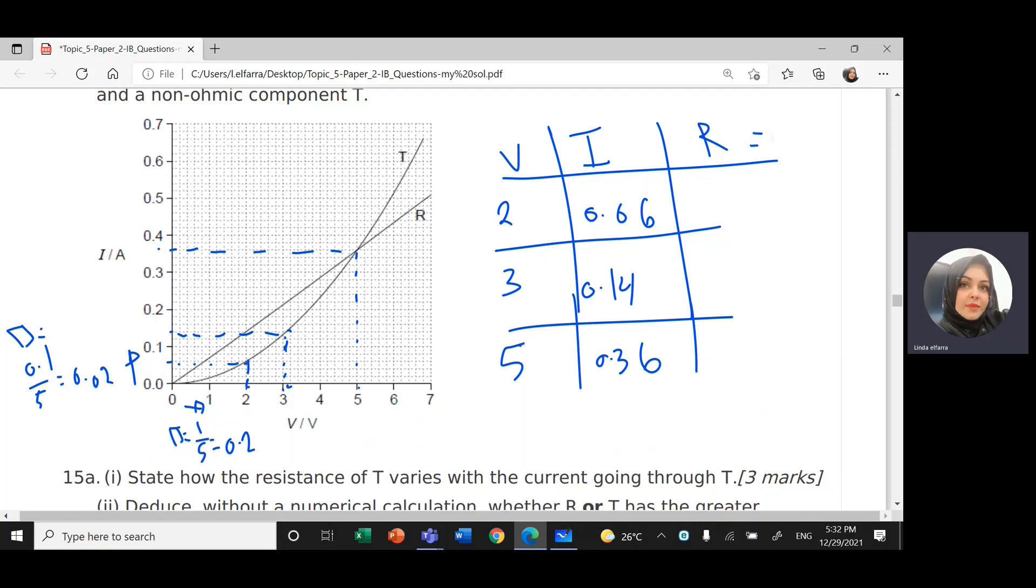Each time I'm going to calculate R from Ohm's law. R, it's voltage divided by the current, V over I. So R equals V over I. So 2 divided by 0.06 will give me almost 33 Ohm.